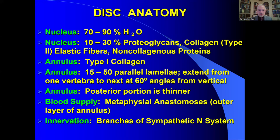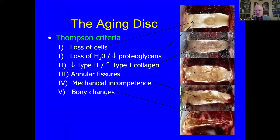The nucleus contains proteoglycans and type 2 collagen, as well as some proteins. The annulus is typified by type 1 collagen and consists of 15 to 50 parallel concentric lamellae overlapping like the skin of an onion, at about a 60-degree angle from vertical. The posterior portion of the annulus is thinner than the anterior portion, which is why disc bulging typically occurs posteriorly with pressurization. There can also be Schmorl's nodes where the annulus bulges up into the vertebral body. The blood supply is the metaphyseal anastomosis, and the innervation comes from branches of the sympathetic nervous system.